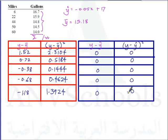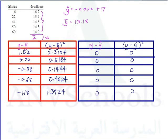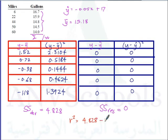So what are we finding? Our SSdev is the sum of the squares of the deviations, which equals 4.828. Our SSres is the sum of the squares of the residuals, which is 0. Therefore, r-squared equals SSdev minus SSres over SSdev, so that's 4.828 minus 0 over 4.828, which equals 1.